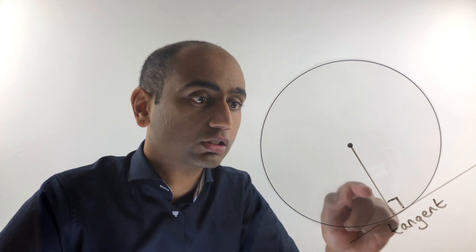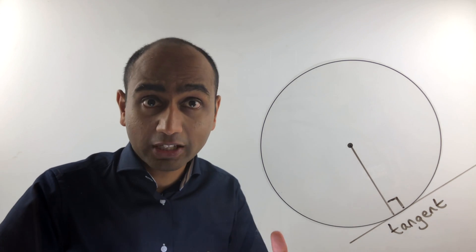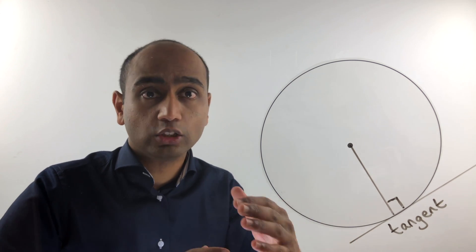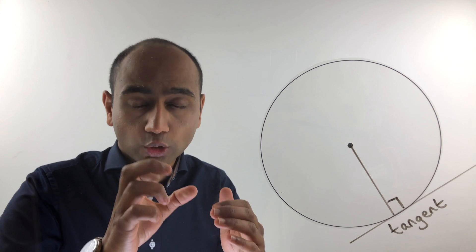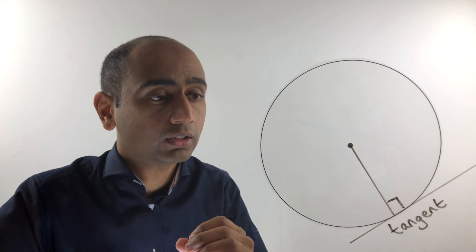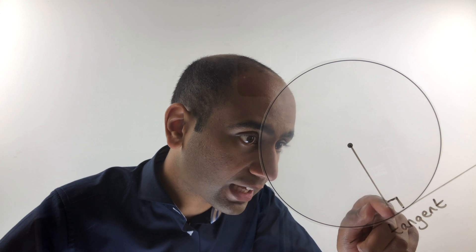Now you may have come across the word tangent when looking at graphs, and you'll know that a tangent just touches the graph locally at one point. The same is true in this case—the tangent just touches the circle at that one point.